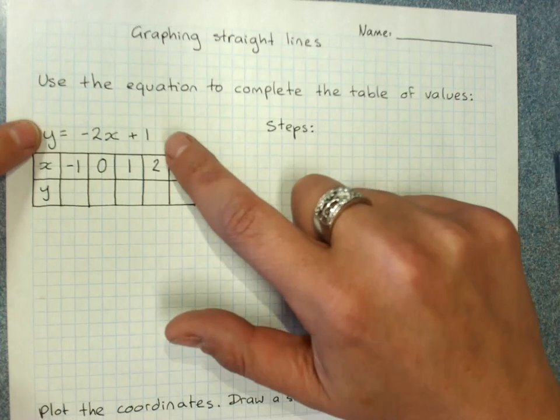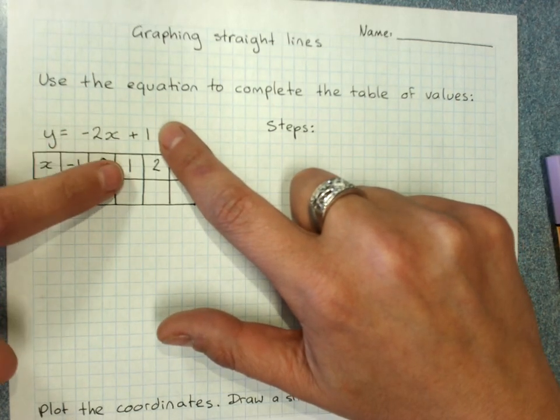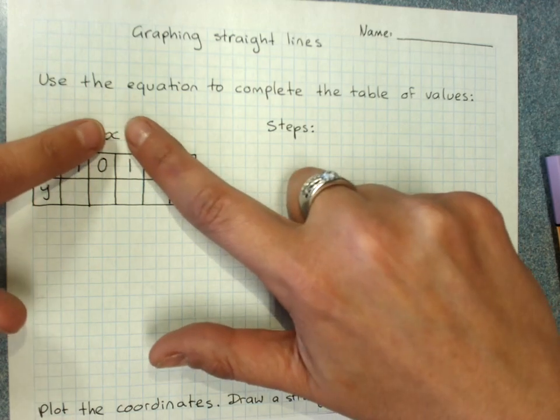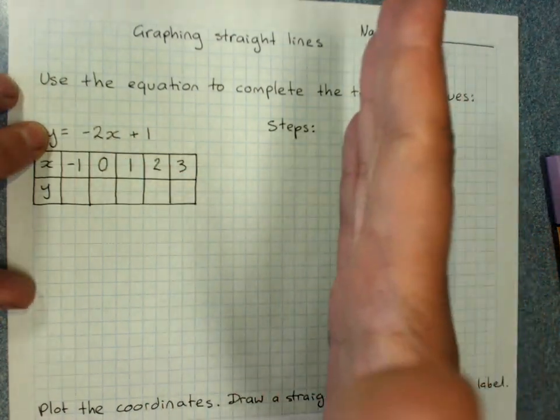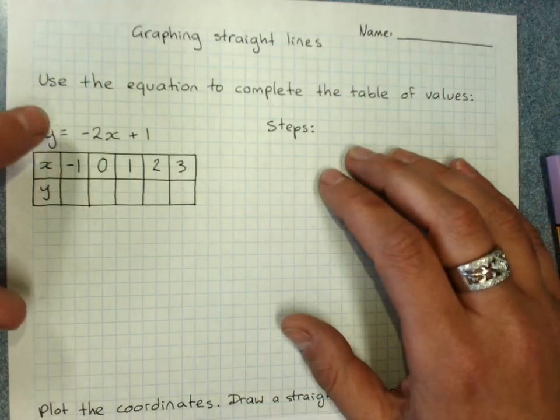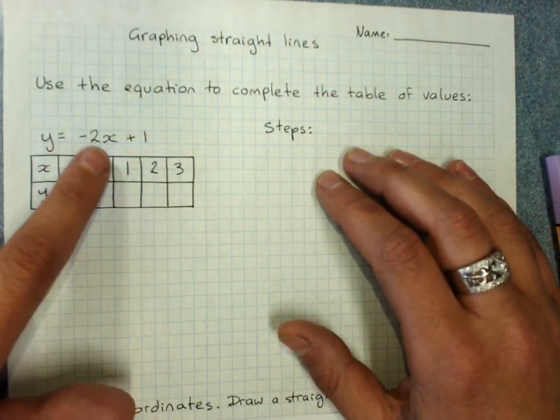Any straight line has an equation that's got x and or y. If it's just got one of them, only x or only y, it's going to be a horizontal or a vertical line. But all the other lines have y equals and there's an x and some numbers involved.